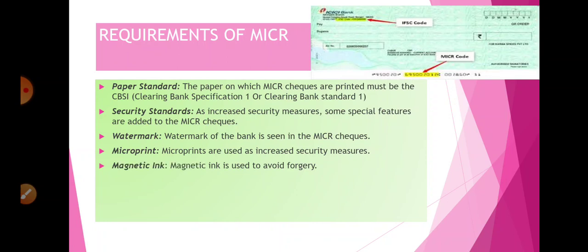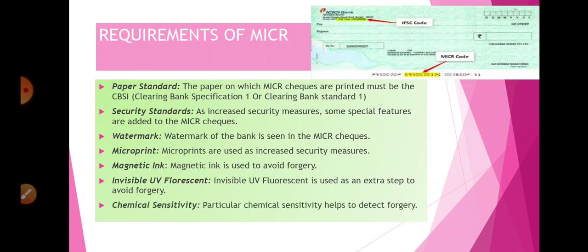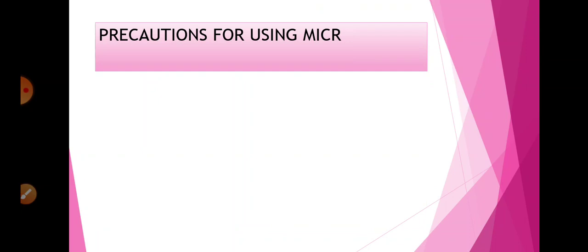Next is magnetic ink, which is used to avoid forgery. Invisible UV fluorescent ink is used so that any chance of fraud is minimized. These fluorescent marks are invisible to the naked eye but are highly secure. Chemical sensitivity is also used, which makes it possible to protect against forgery with the help of MICR technology. When MICR technology is used in a cheque, certain precautions must be kept in mind.